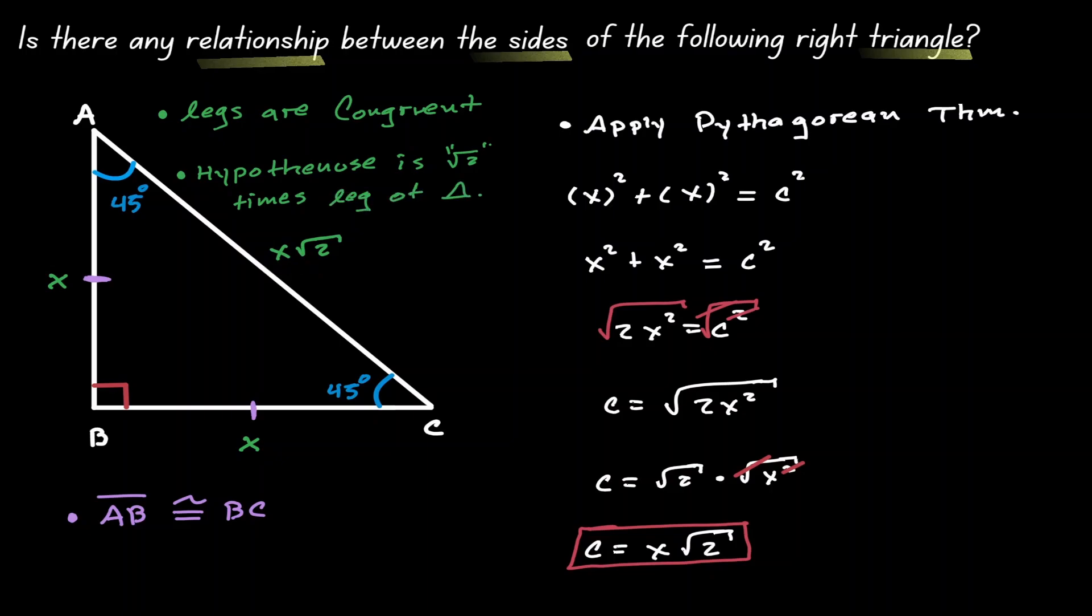And this is what we call the relationship of a 45-45-90 degree right triangle. Let's apply this relationship in the following examples.